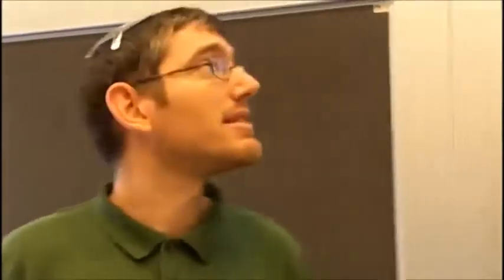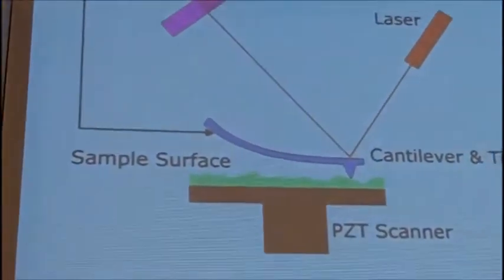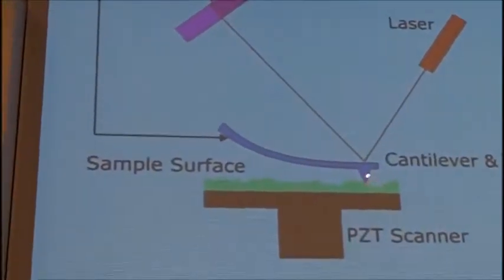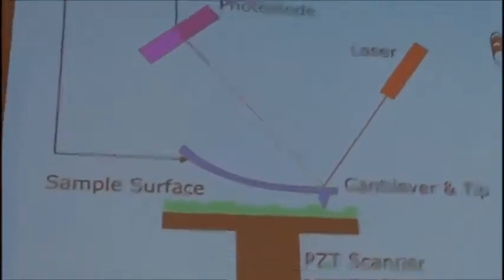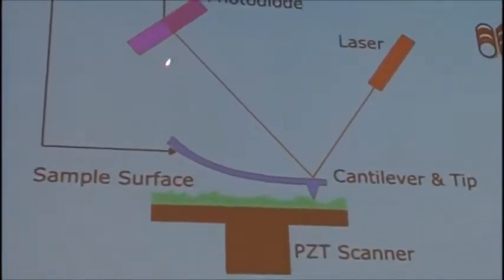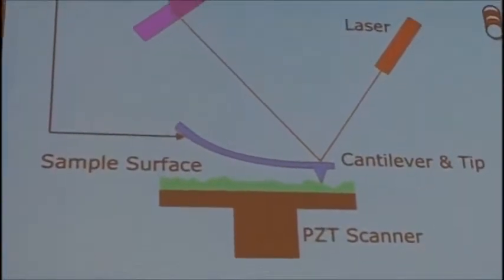Now how does that help us to get a better resolution? The tip has a very, very small diameter at the bottom, typically something like 10 nanometers or even less, so our resolution can become really 10 or even 5 nanometers in the spatial resolution. So what happens next? We have here the tip touching the sample, and we know that it is very close to the sample because the laser deflected a little bit up.